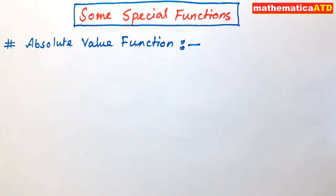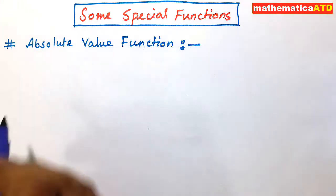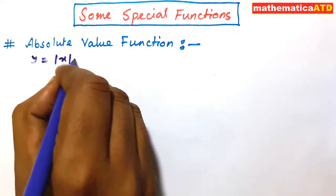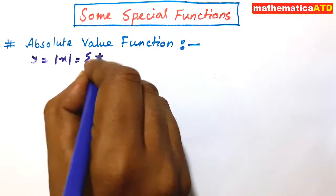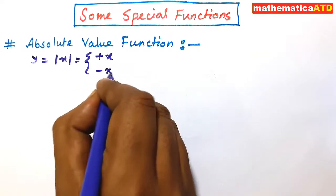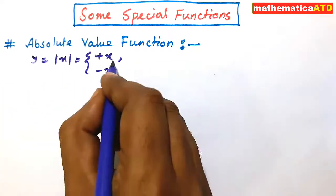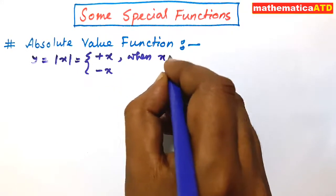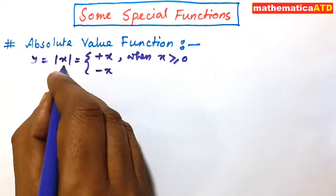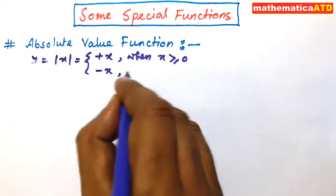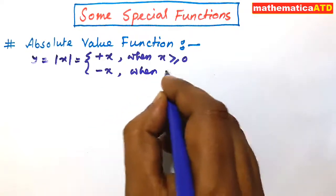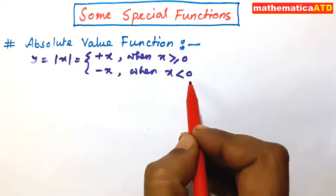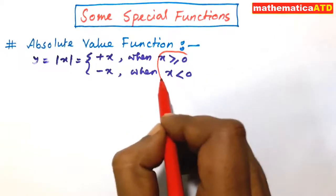What is the absolute value function? Let us consider that y = f(x) and f(x) = |x|. This may be written as +x or -x. So y = |x| = +x when x ≥ 0, and y = |x| = -x when x < 0. Here, x ≥ 0 and x < 0 is actually the domain of this function.